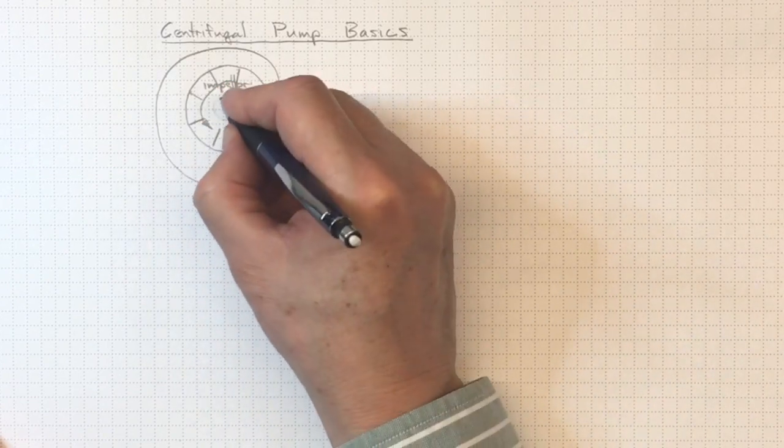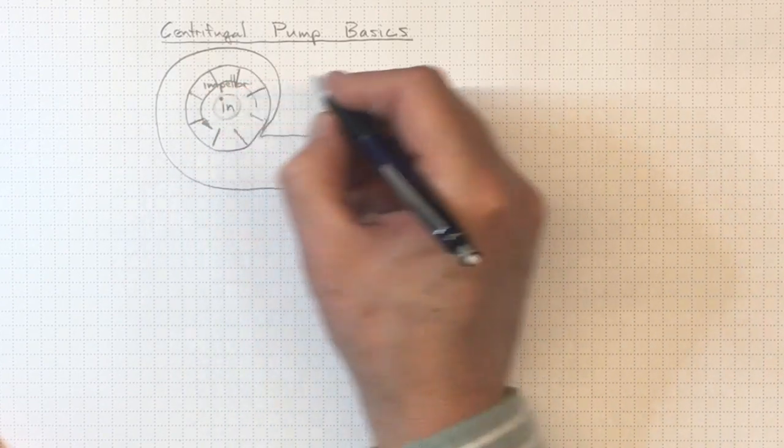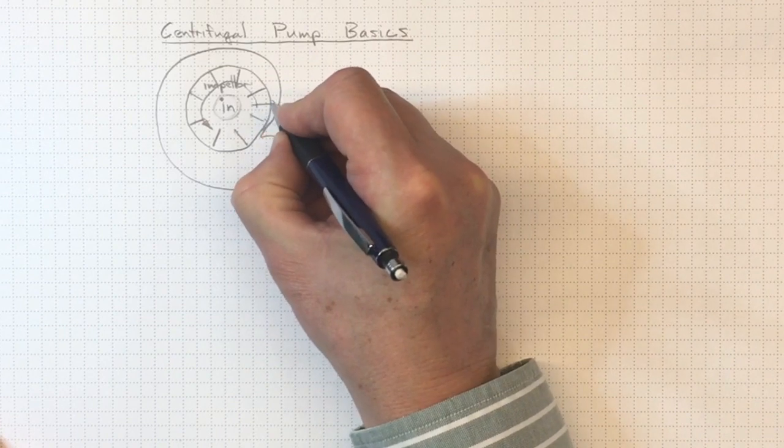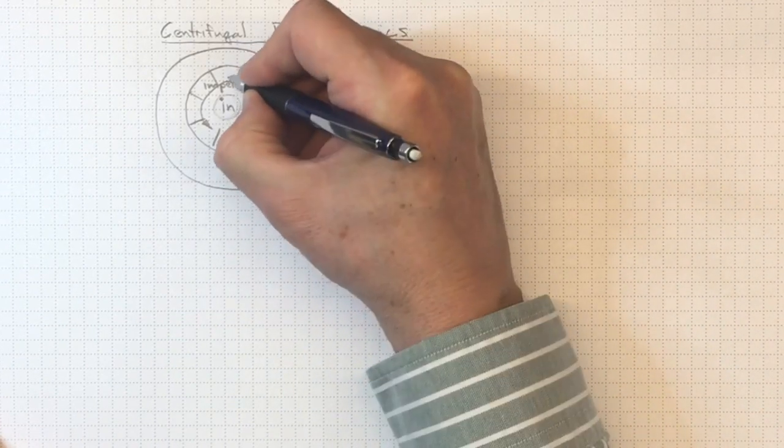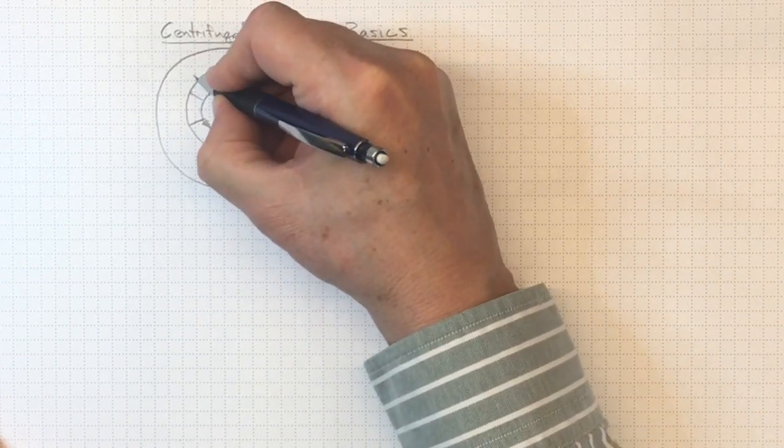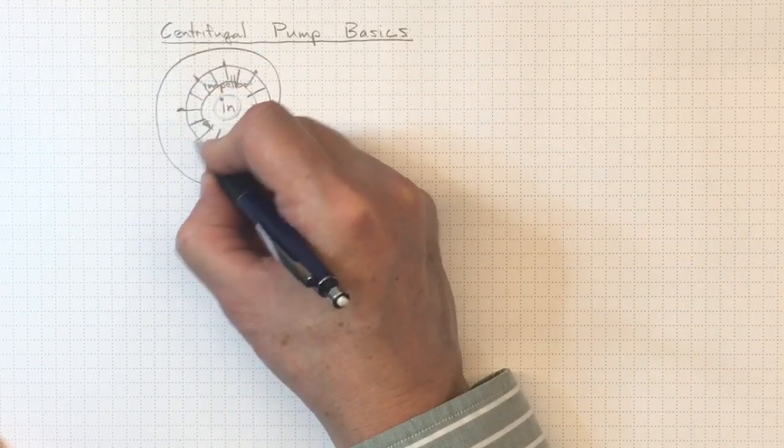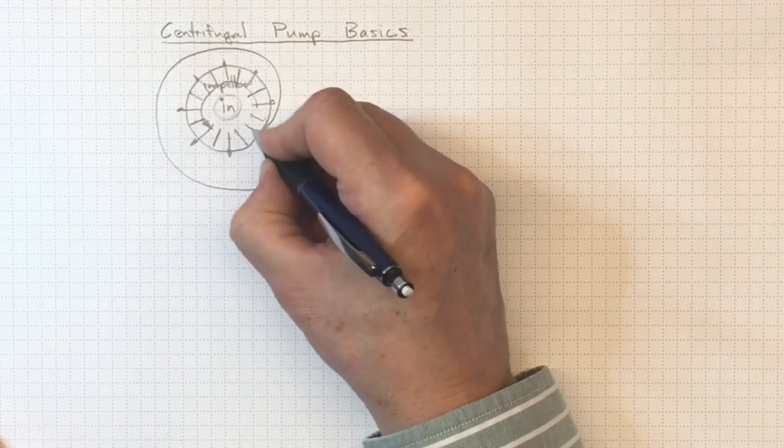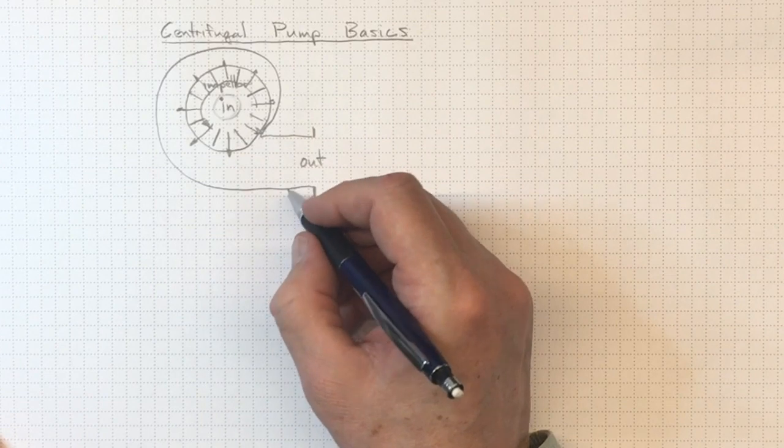So if this impeller is rotating and liquid is coming in the center here, it will go outwards, centrifugally out following the blades towards the outside of the impeller, driven by centrifugal force.